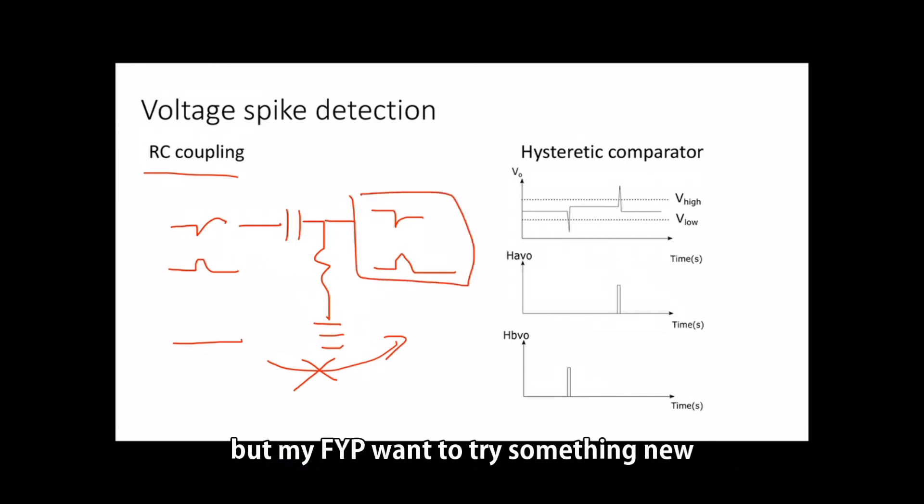But my final year project wants to try something new. Therefore, I use hysteresis comparator. If the output of LDO is lower than the threshold VL, it will trigger one of the comparator and generate a rail-to-rail signal.